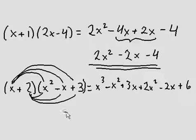Now all we need to do is combine all like terms. x cubed has no like terms here, there's just one term with x cubed. Now x squareds. We have these two terms with x squared. Negative x squared plus 2x squared is just positive x squared.